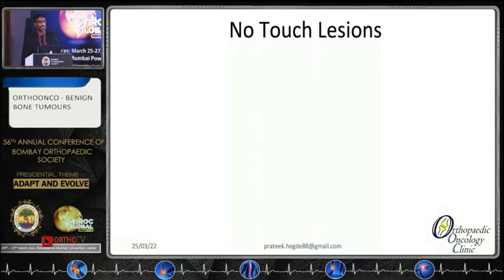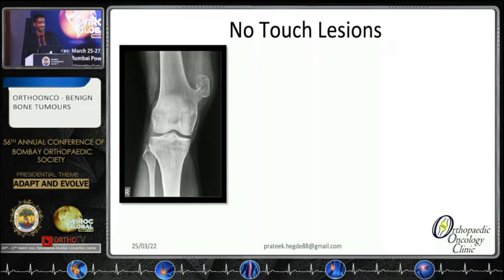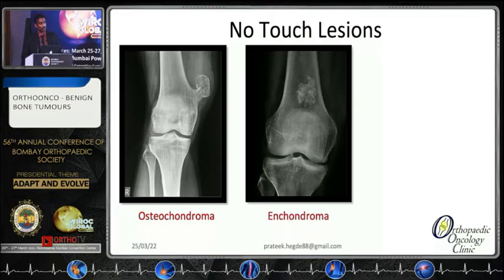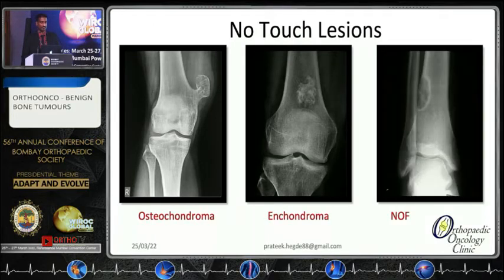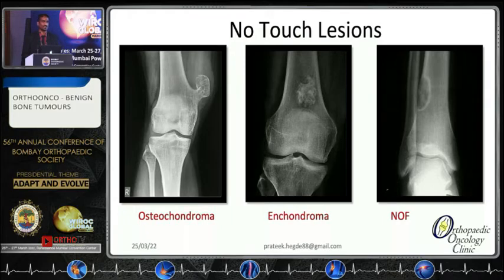The no-touch lesions are very characteristically identified on radiology itself — osteochondroma, enchondroma, or non-ossifying fibroma. These are sometimes incidentally found. Very rarely they might start giving trouble, like an osteochondroma which might undergo malignant transformation, in which case they need intervention. Otherwise, if they are not troubling, you can just keep them under observation.